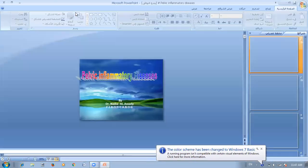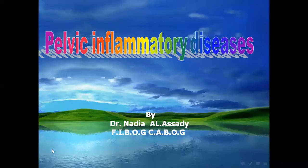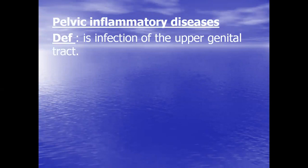Our lecture today is about PID. PID is defined as pelvic inflammatory disorder, which is defined as infection of the upper genital tract, which includes the cervix, uterus, fallopian tubes, and both ovaries. The infection that involves the vagina and vulva is called the lower genital tract infection.